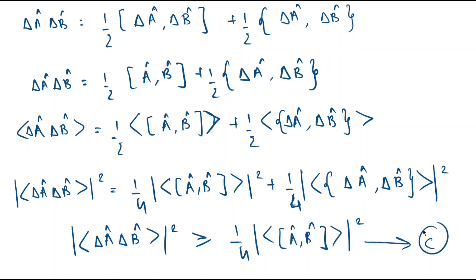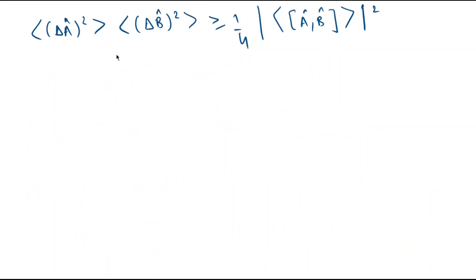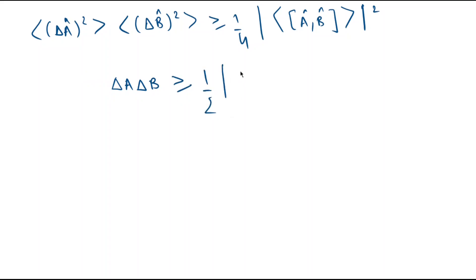Comparing this equation C with equation B, and taking the square root on both sides, the equation reduces to: delta-A times delta-B is greater than or equal to one-half times the modulus of the expectation value of the commutator of A-cap and B-cap. This is the general uncertainty relation between two operators.